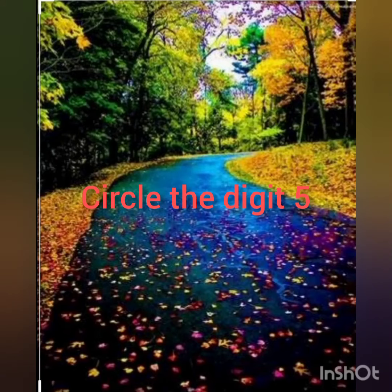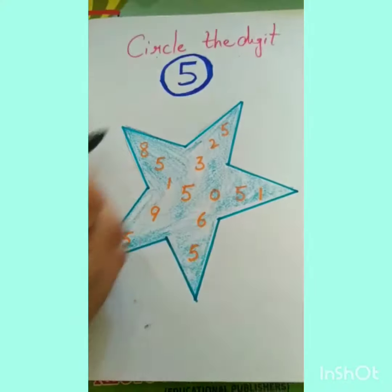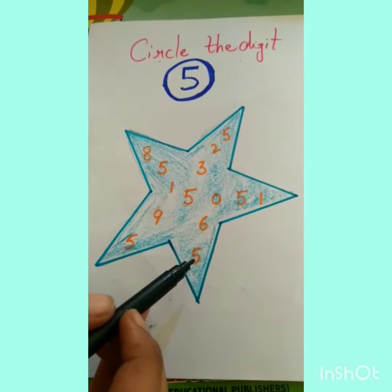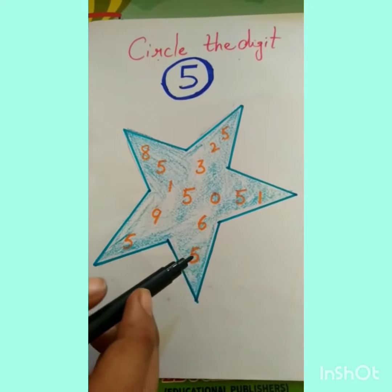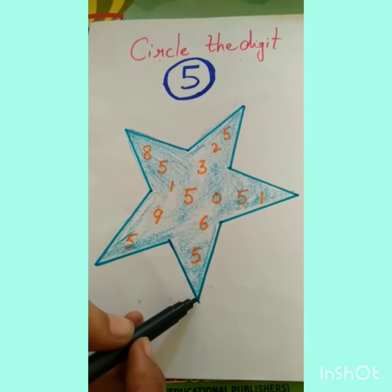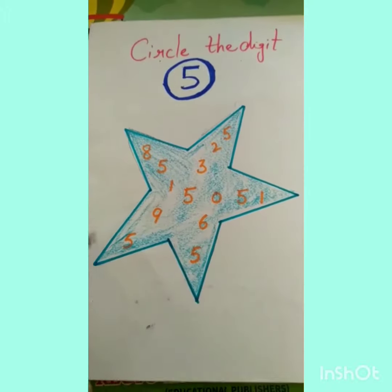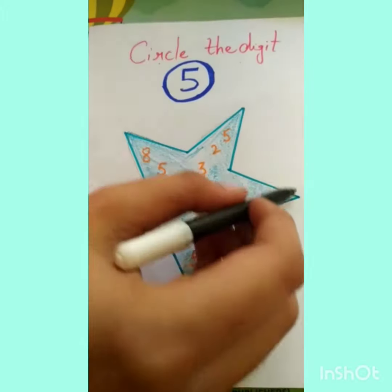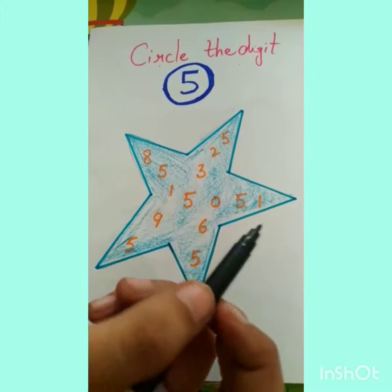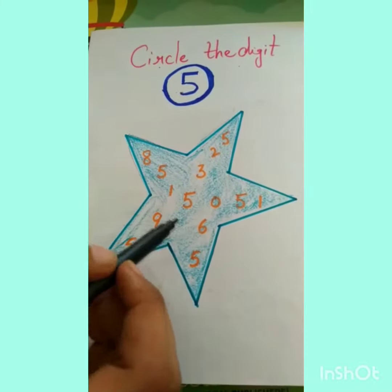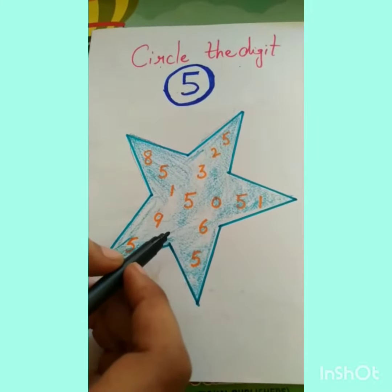Hello, how are you today? We will circle the digit 5. Let's find the 5 digit from the star. Count the corners: 1, 2, 3, 4, 5. So here is the number 5. Now let's find out the 5s.